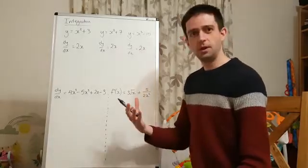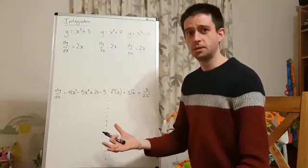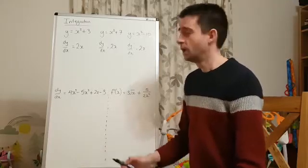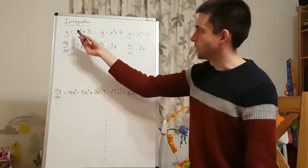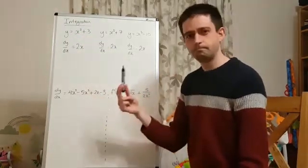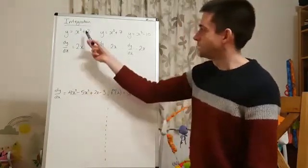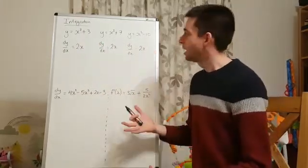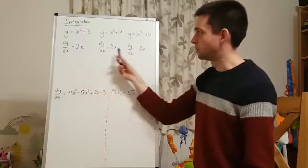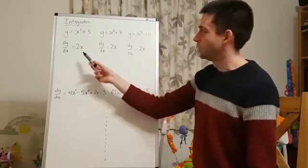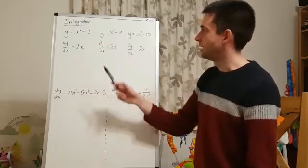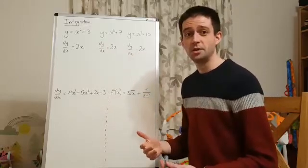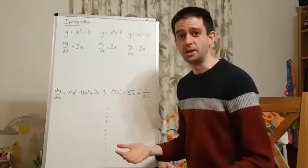So if integration performs the opposite function, the inverse operation of differentiation, if we integrate 2x we should get x squared, at issue: x squared plus 3, x squared plus 7, x squared minus 10. How do we know if we start with 2x, which was our result for all of these three, whether we get x squared plus 3, x squared plus 7, or x squared minus 10? Well, the answer is that we don't know, because we don't have enough information.